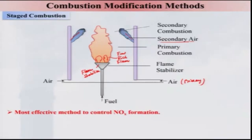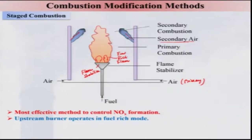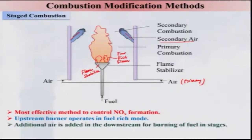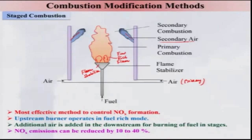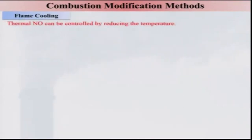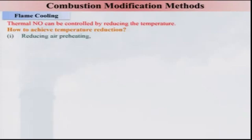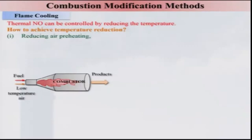This is the most effective method to control NOX emission level: the upstream burner operates in fuel-rich mode and the downstream section operates under lean conditions. When additional air is added downstream, thermal NOX emission can be reduced by 10 to 40%. Regarding flame cooling, thermal NO can be controlled by reducing the temperature of the combustion gases — achieved, for example, by reducing the preheating of air entering the combustion chamber.